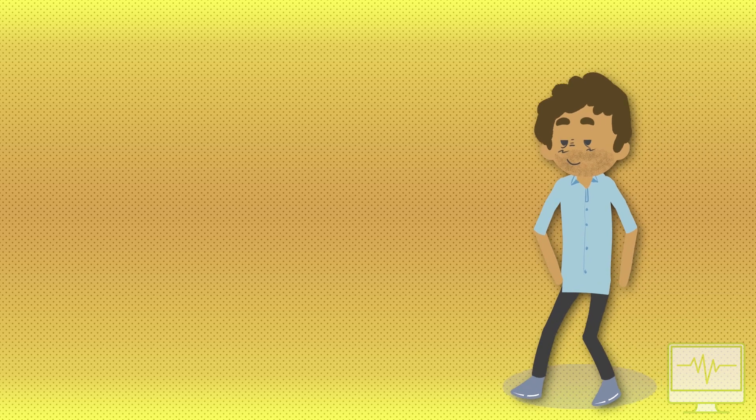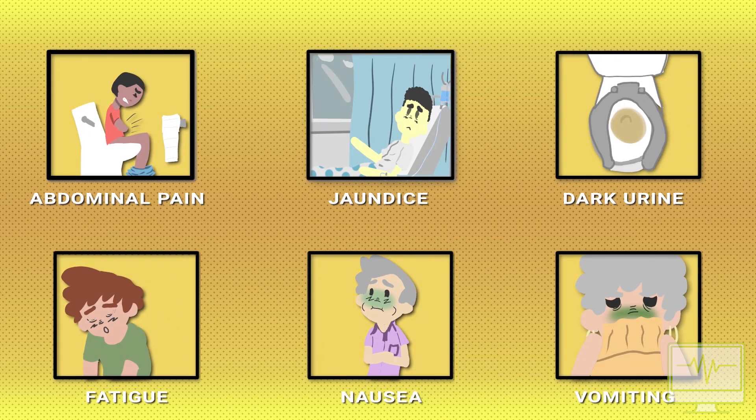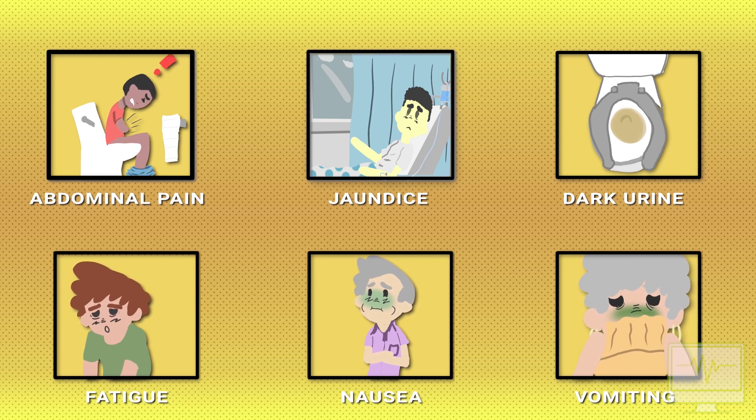Acute infection is mostly asymptomatic, but some people can have illness lasting a few weeks with abdominal pain, jaundice, dark urine, extreme fatigue, nausea and vomiting.